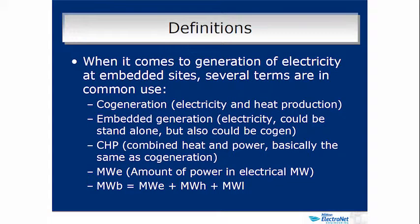Just to clarify a few definitions: cogeneration is a type of embedded generation. People also talk about combined heat and power — CHP. If you're in the process industry, you probably think of it as a CHP plant. CHP and cogeneration are the same thing, essentially — you can use the terms interchangeably. Electrical engineers tend to prefer 'cogeneration' while process engineers refer to it as 'CHP,' but we're talking about the same thing.